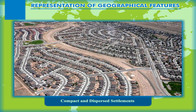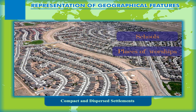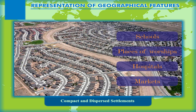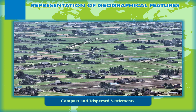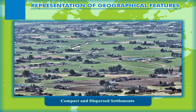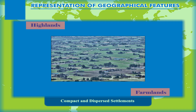Compact and Dispersed Settlements: Settlements where all houses are built side by side leaving narrow lanes and by-lanes are called compact settlements. There are collective amenities to serve the people, like schools, places of worship, hospitals, and markets. Dispersed settlements serve few families and houses are scattered in isolated places. Life is simple and quiet as there is little opportunity for social gathering. These types of settlements are found on highlands or farmlands.